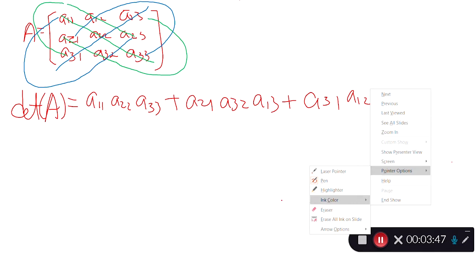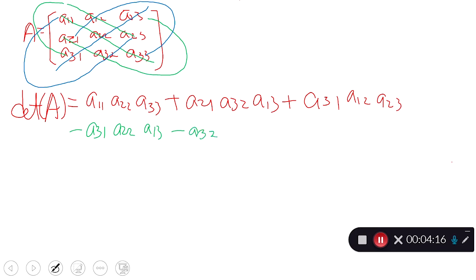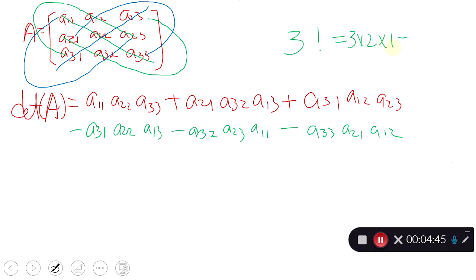The negative terms are: A31 times A22 times A13, then A32 times A23 times A11, and the last one is A33 times A21 times A12. So totally six terms. You can compute this by 3 factorial because 3 times 2 times 1 equals six, so you have six terms.